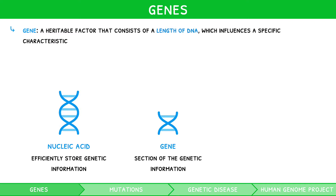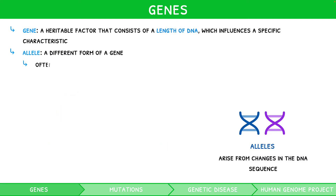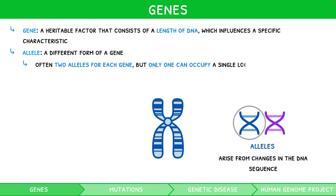When discussing genes, the term alleles is commonly used. An allele is a different form of a gene. They arise from changes in the DNA sequence, known as mutations, explored later in this video. There are often two alleles for each gene, and sometimes more, but only one can occupy a single location, known as a locus.